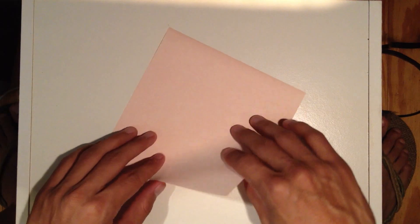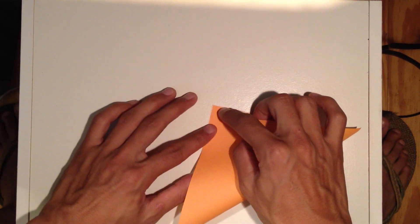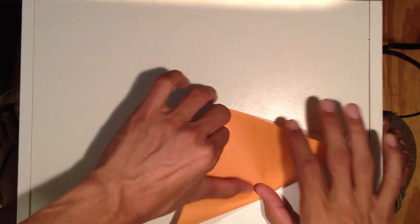I'm going to get kind of this orange color today. So the first step we're going to do is fold this in half, point to point, like this, into a triangle.